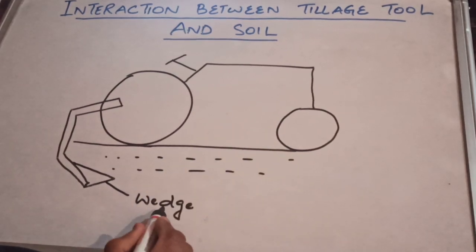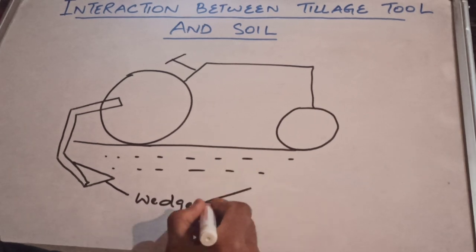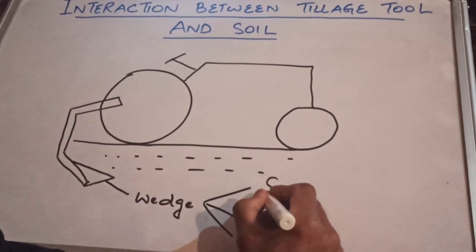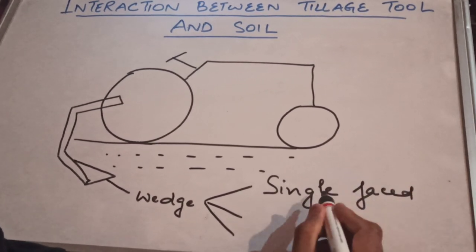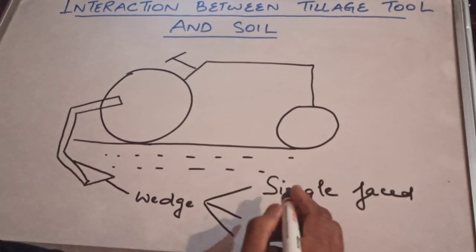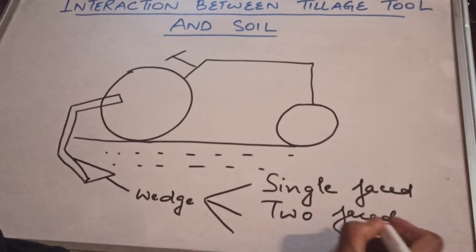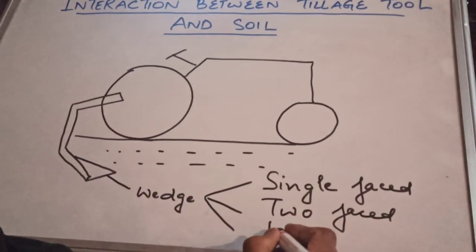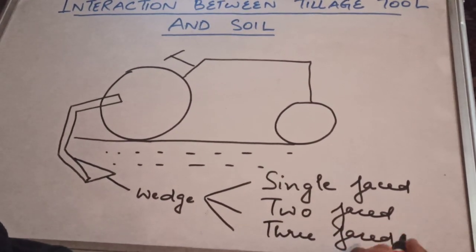This wedge can be of three types: either it can be single faced, that means only one surface is interacting with the soil, or it can be two faced, that means two surfaces are interacting with the soil, or it can be three faced.